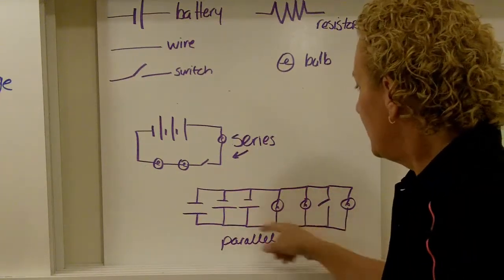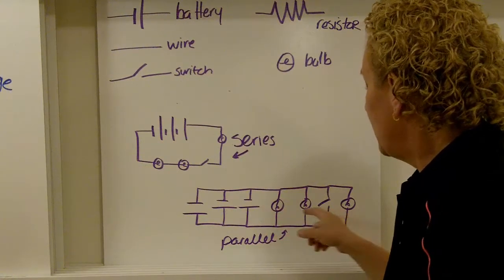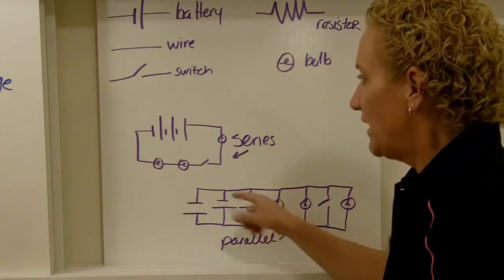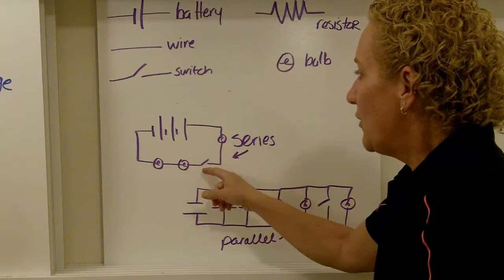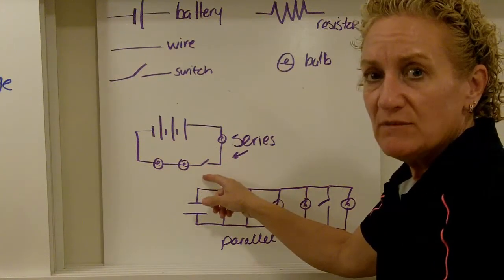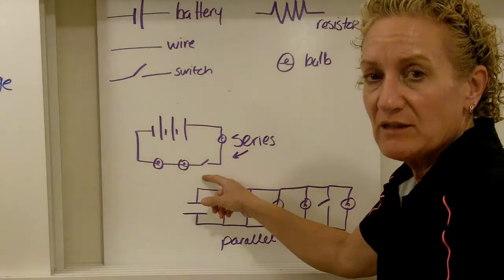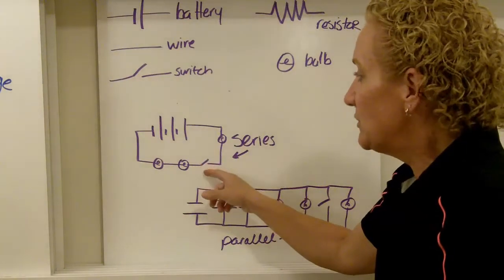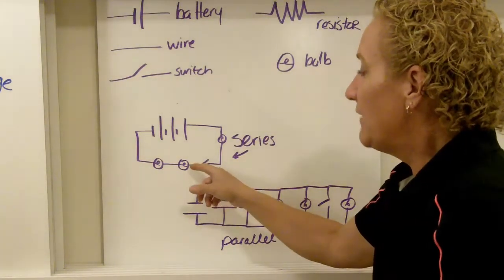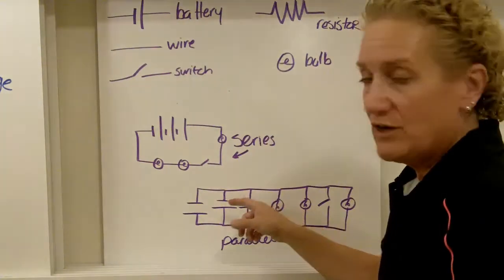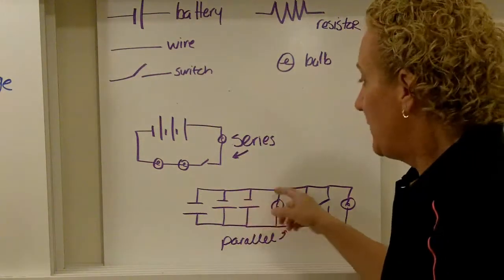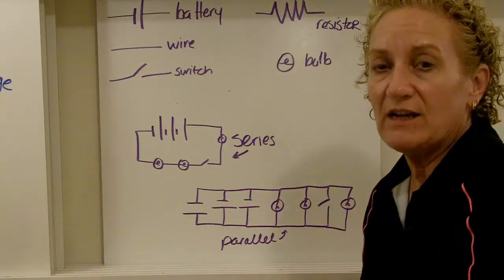With these, each one of these light bulbs will stay lit if one of them burns out. With these, they won't. Of course, the switch needs to be closed in order for the path to be complete. But once the switch is closed, the path is complete. If even one of the batteries burns out in series, they all do. They don't all burn out, but they all go out. In parallel, if one burns out, they're all just fine.